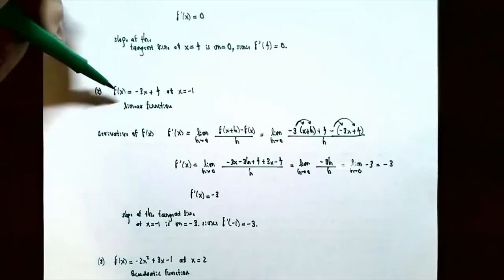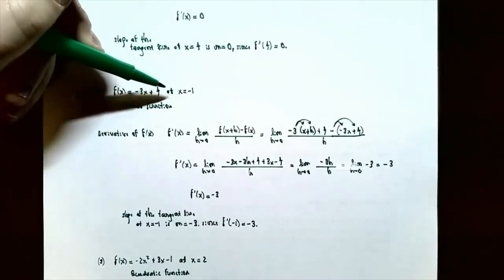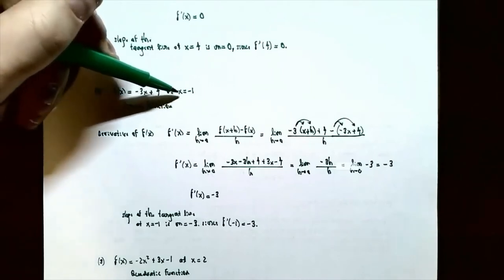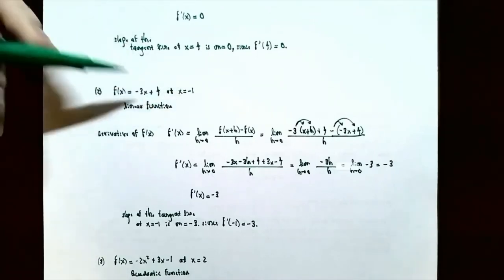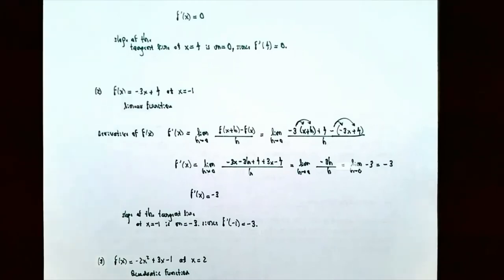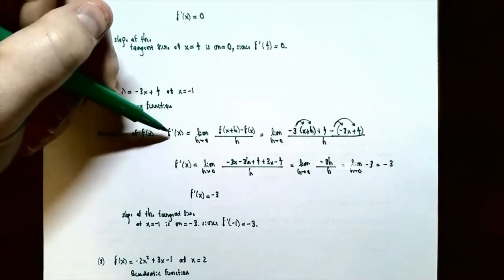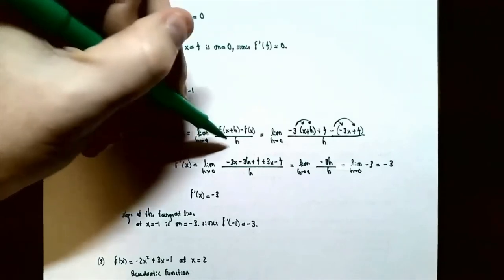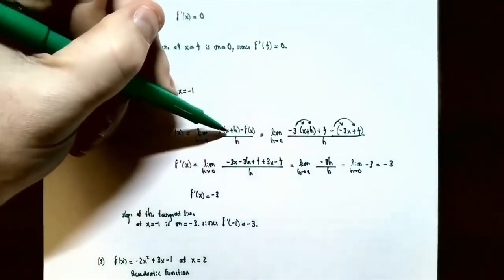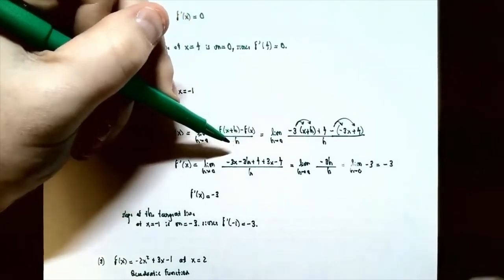Number 2: f of x equals negative 3x plus 4, and we want to find the slope of the tangent line at x equals negative 1. This function is a linear function because x is raised to the first power. The derivative of f of x is f prime of x, the limit as h approaches 0 of the difference quotient: f of x plus h subtract f of x, all divided by h.